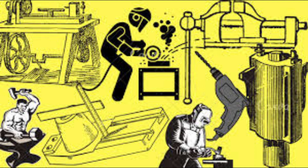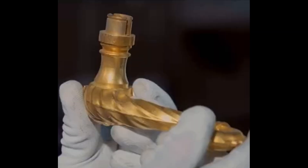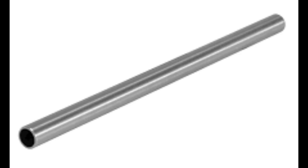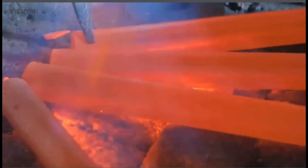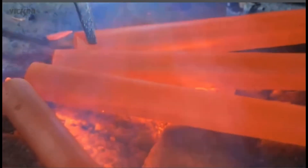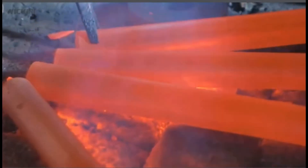This video divides these processes into two categories using a practical example. The manufacturing of the door handle from a metallic rod starts by heating this rod to increase its ductility to be easy to deform.